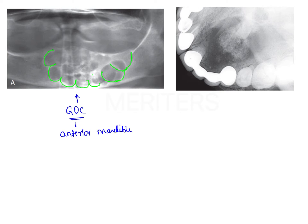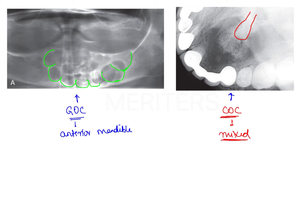The next picture shows a calcifying odontogenic cyst, which is characterized mainly by a mixed radiolucent-radiopaque lesion in association with an unerupted tooth. An occlusal view is shown here — you can see an unerupted tooth and observe the mixed radiolucent-radiopaque lesion with radiopaque specks seen within the lesion.